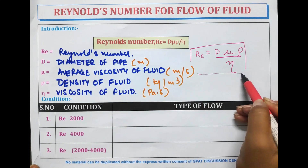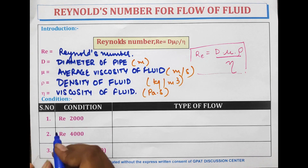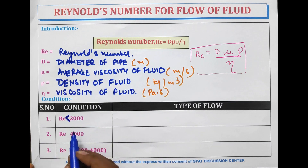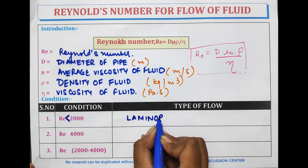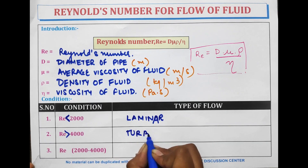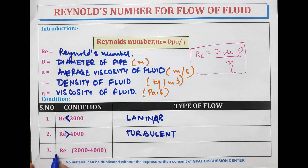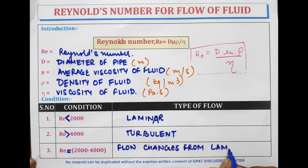The conditions to determine the type of flow: when Reynolds number is less than 2,000 the flow will be laminar, when Reynolds number is more than 4,000 the flow is turbulent, and when Reynolds number is between 2,000 and 4,000 the flow changes from laminar to turbulent.